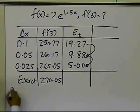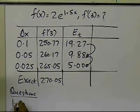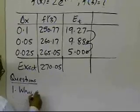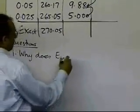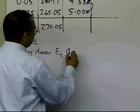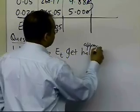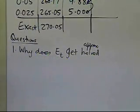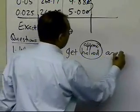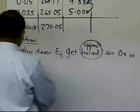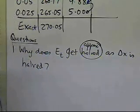So what I would like you to do is, these are the questions which I would like you to answer on this segment. One is, why does the true error get halved, I should say approximately halved, not exactly halved, because it's approximately halved as delta x is halved. So I would like you to answer that question.